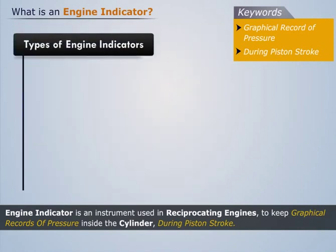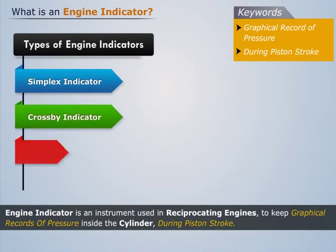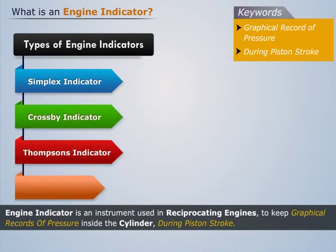There are four types of engine indicators: Simplex indicator, Cross-by indicator, Thompson's indicator, and Dobby-McInn's indicator. Now let us discuss each of these types one by one.